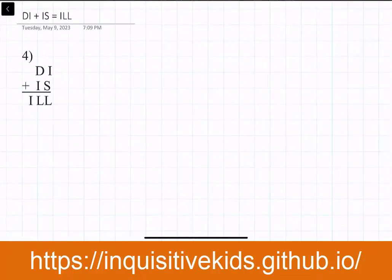Here's problem four of our cryptarithms. DI + IS = ILL. I think it means DI plus IS equals ILL. How will we solve this problem? Of course, I equals one. As you can see, D plus one equals a two-digit number.